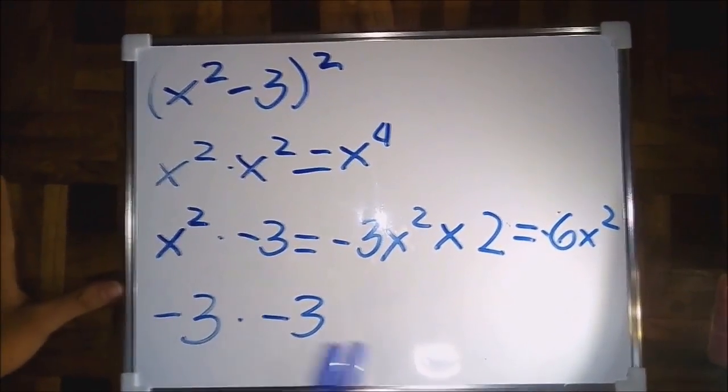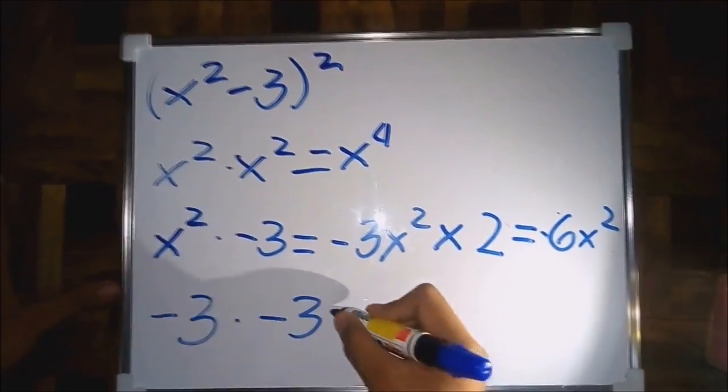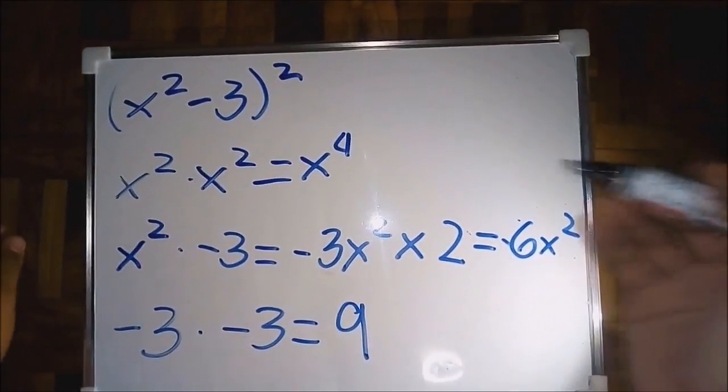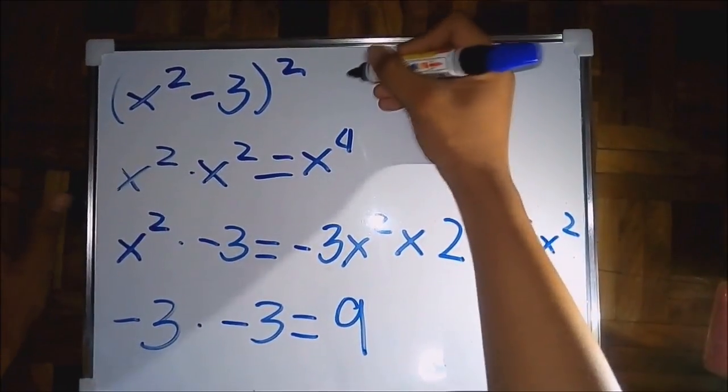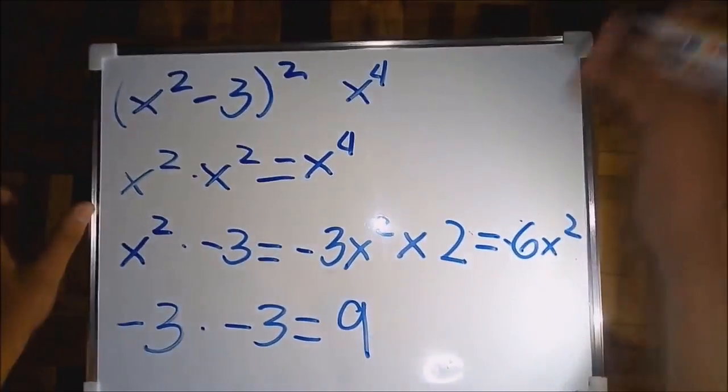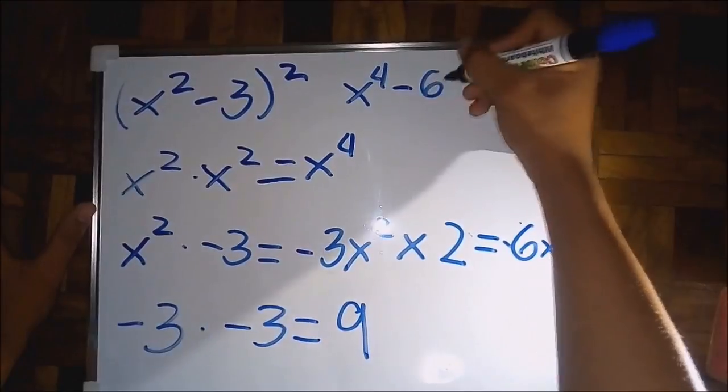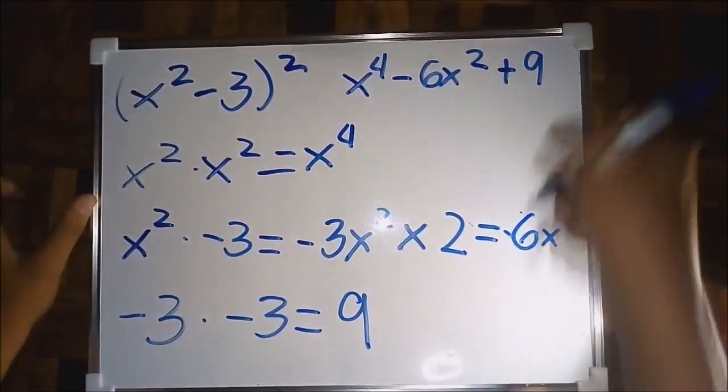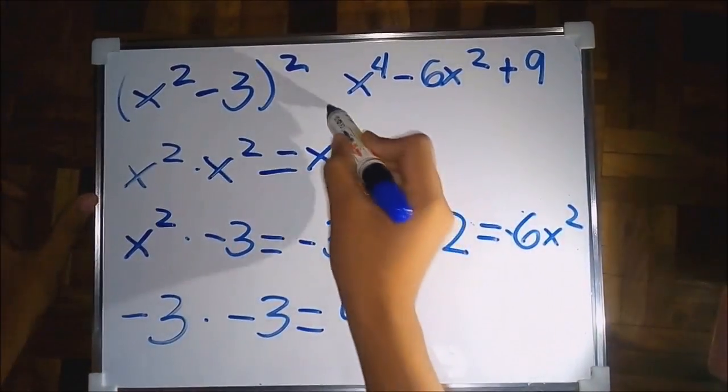Negative times negative equals positive, so positive 9. Let us all write our answers. x to the fourth power minus 6x squared plus 9. There are no like terms, so this is the final answer.